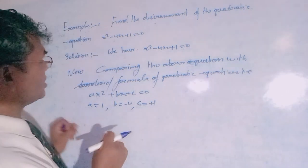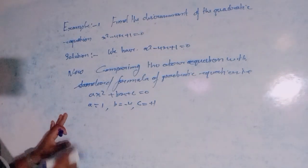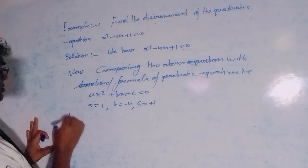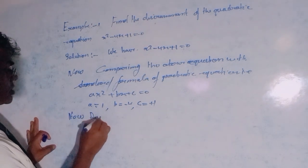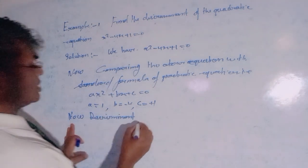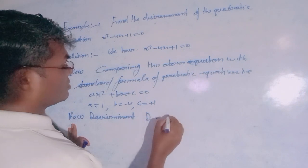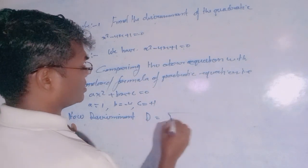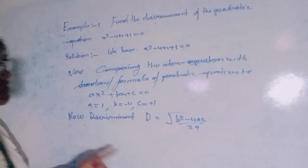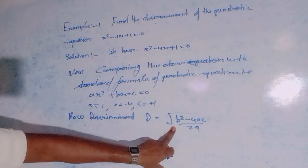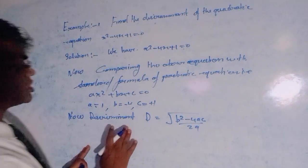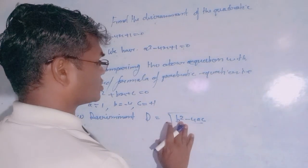Now, the discriminant D is equal to b squared minus 4ac. This is the formula for the discriminant. So discriminant D equals b squared minus 4ac.